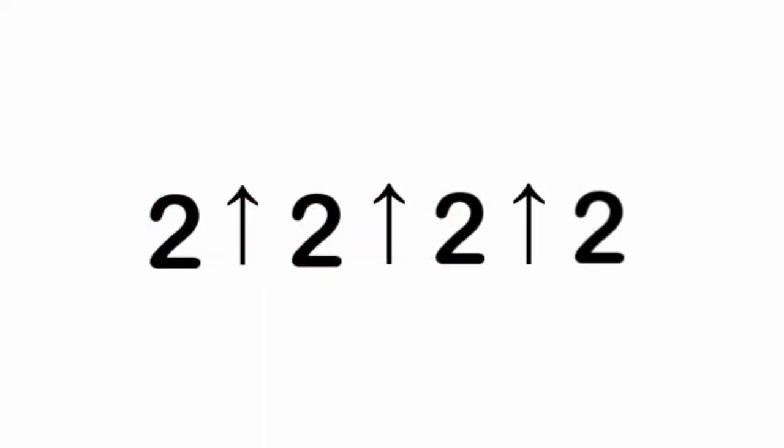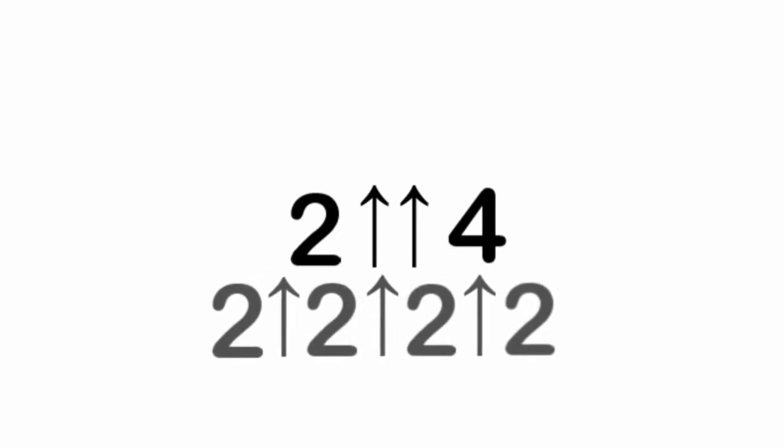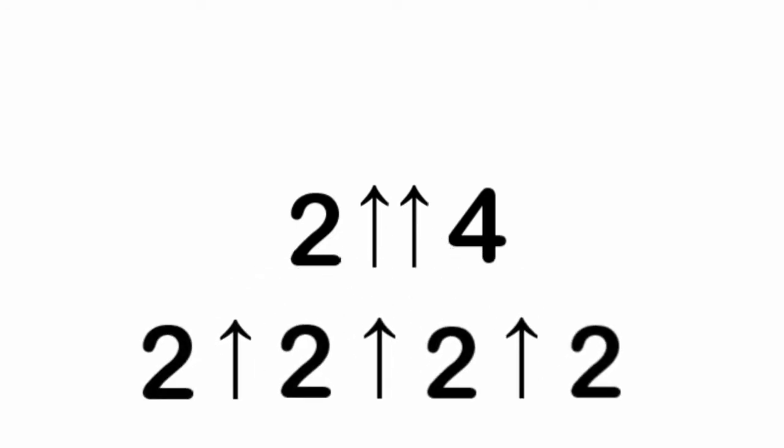This whole thing can be written as 2 double arrow 4, which is the repeated single arrow. You exponentiate 2 to itself 4 times.